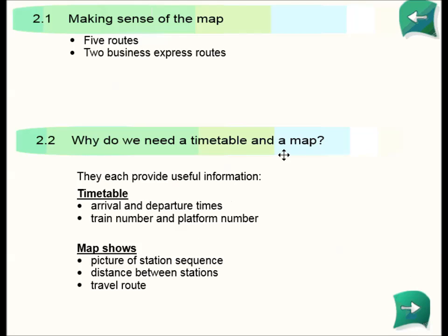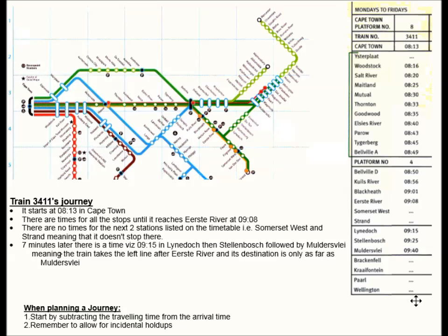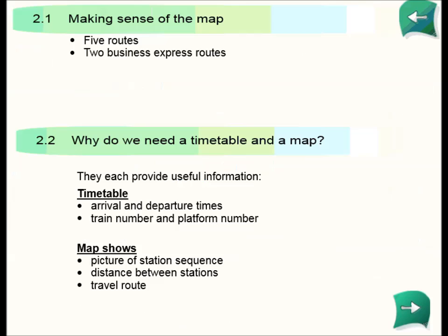Why do we need both a timetable and a map? They each provide useful information. The timetable shows the arrival and departure times, while the map shows the picture of a station sequence, the distance between stations, and the travel route.